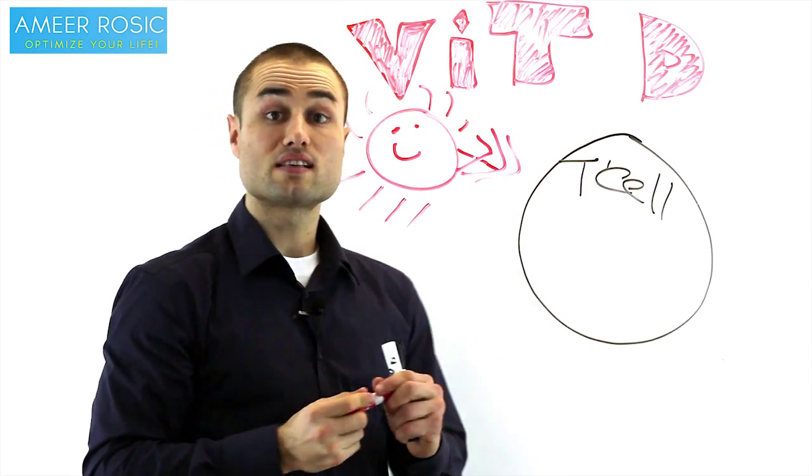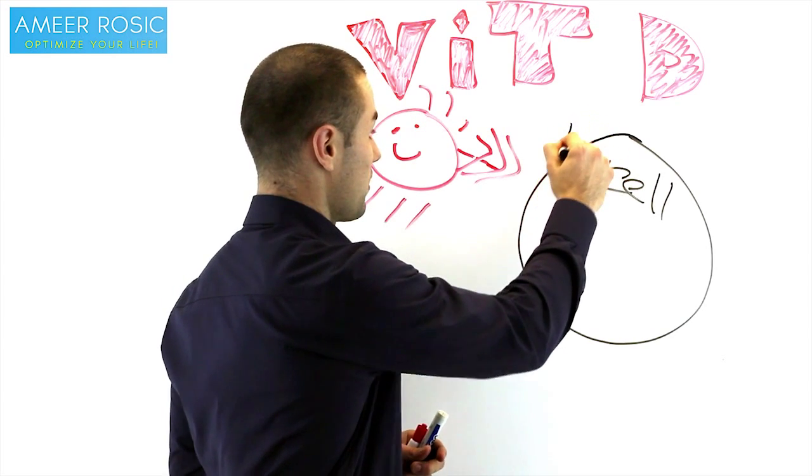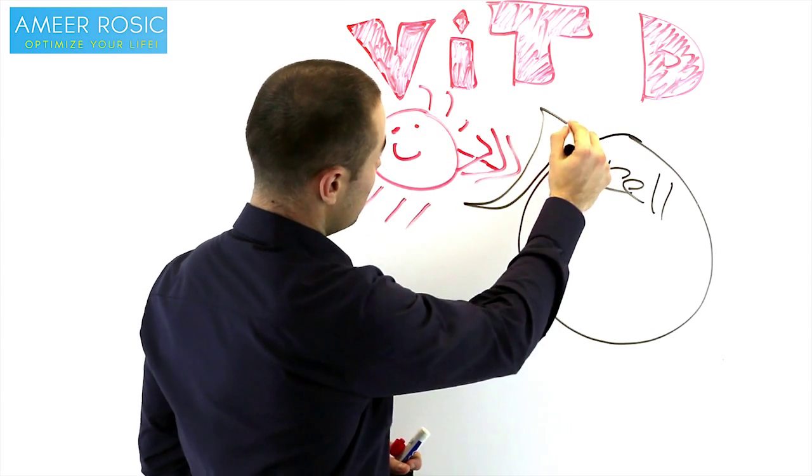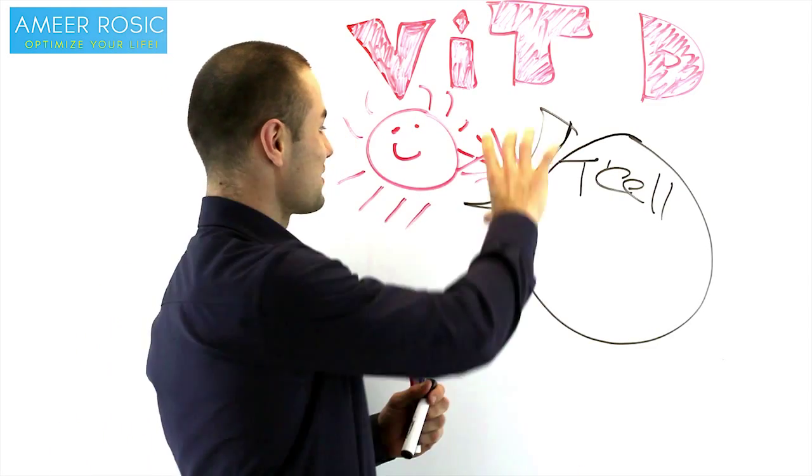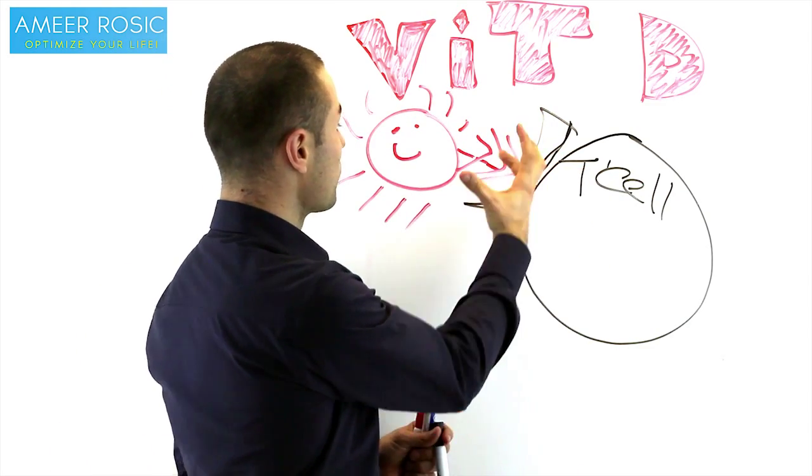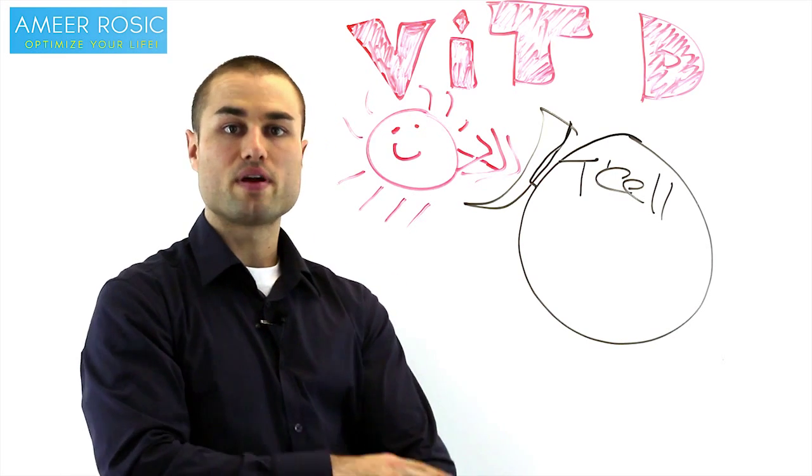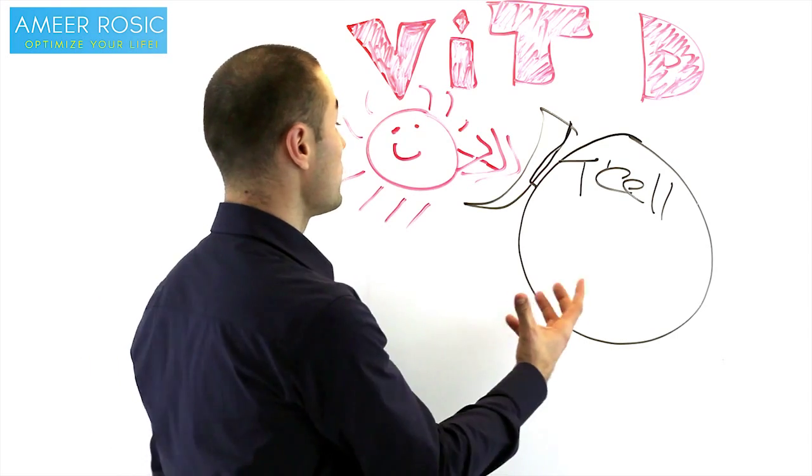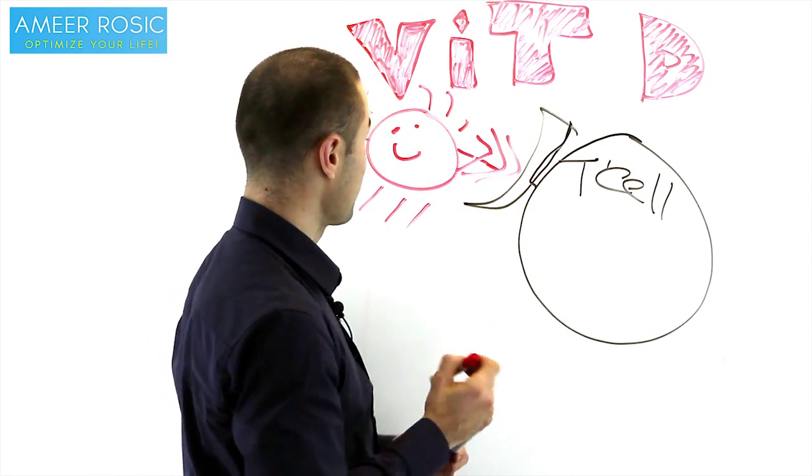And your T cell has a thing on the surface or surrounding area of its skin, known as a T cell receptor. The T cell receptor will actually grab the vitamin D from the sun. So from the UVA, UVB rays, your skin makes vitamin D, goes in your blood. So once in your blood, your T cells will grab the vitamin D.